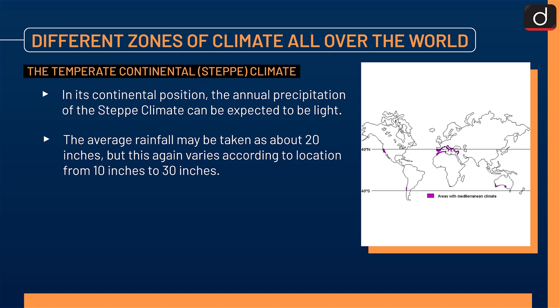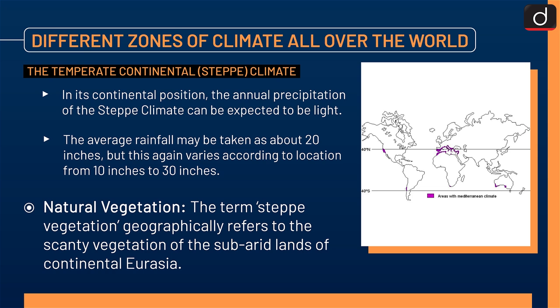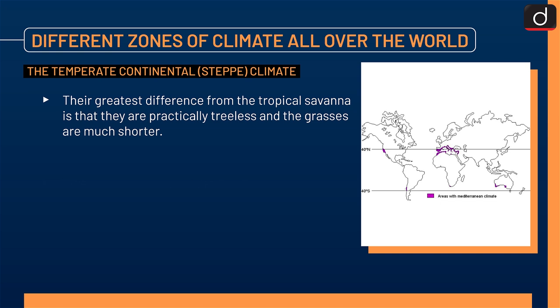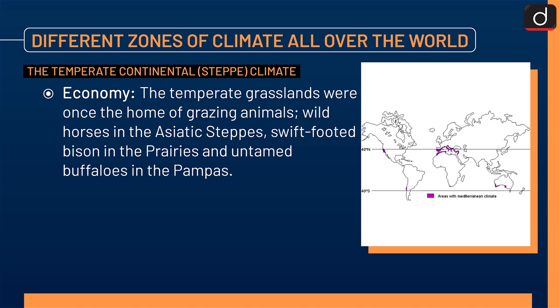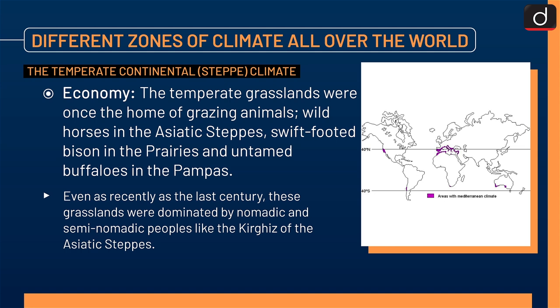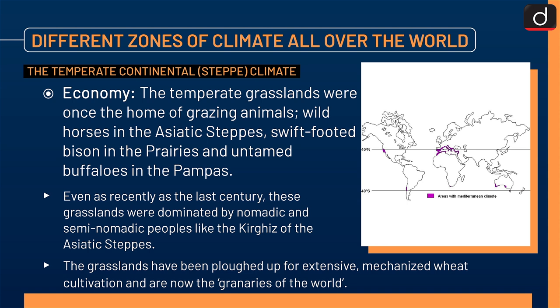Natural vegetation: the term steppe vegetation geographically refers to the scanty vegetation of the sub-arid lands of continental Eurasia. Their greatest difference from the tropical savannah is that they are practically treeless and the grasses are much shorter. Where the rainfall is moderate, above 20 inches, the grasses are tall, fresh and nutritious and better described as long prairie grass. Economy: the temperate grasslands were once the home of grazing animals — wild horses in the Asiatic steppes, swift-footed bison in the prairies, and untamed buffaloes in the pampas. Even as recently as the last century, these grasslands were dominated by nomadic and semi-nomadic peoples like the Kyrgyz of the Asiatic steppes. The grasslands have been ploughed up for extensive mechanized wheat cultivation and are now the granaries of the world.